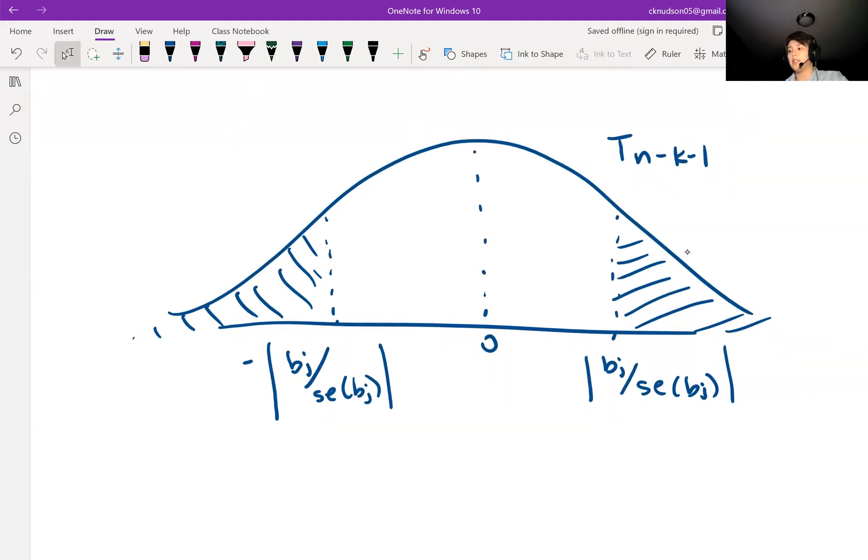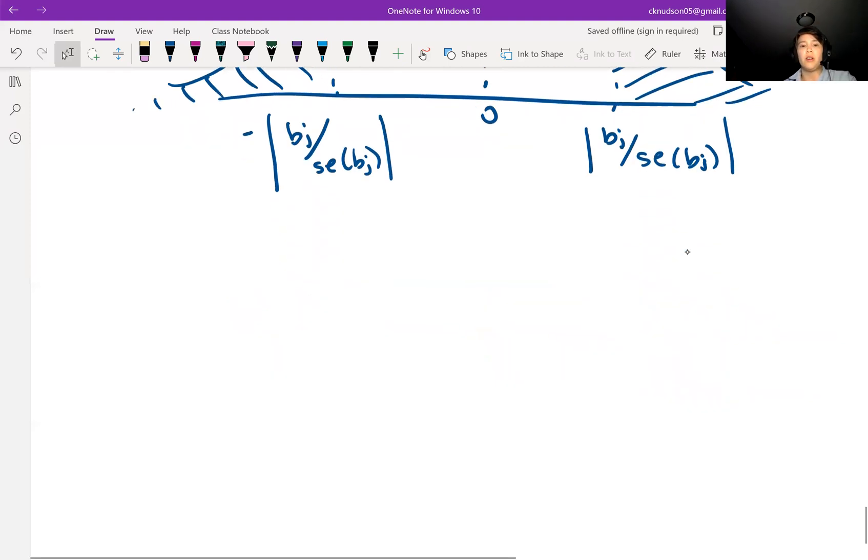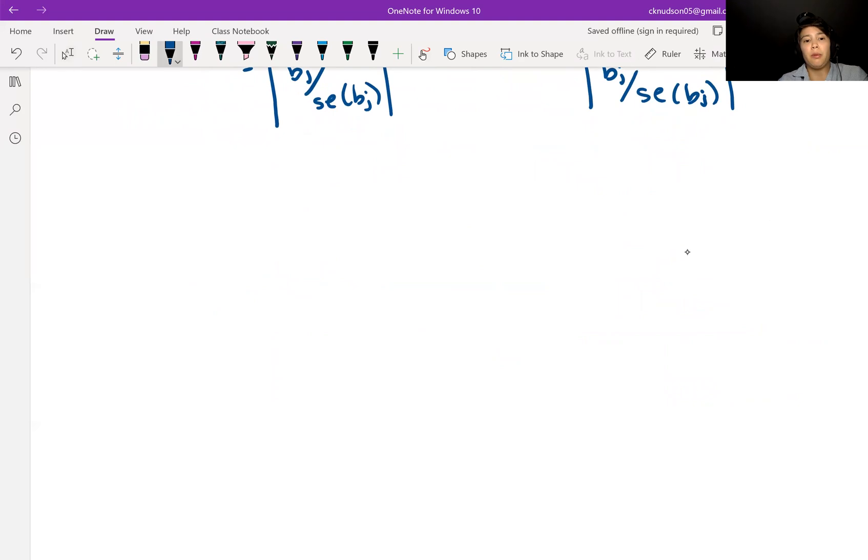That's our Wald test and then similar to confidence intervals and simple linear regression, we know that a confidence interval would look like our point estimate.